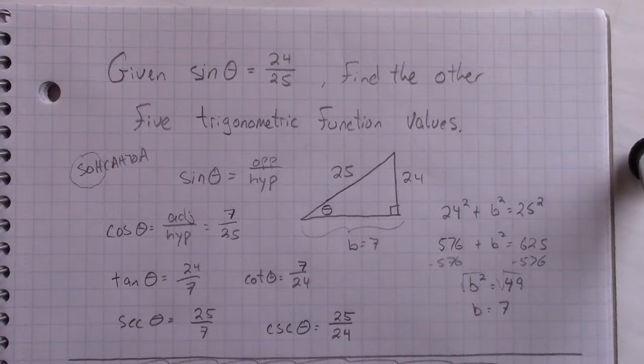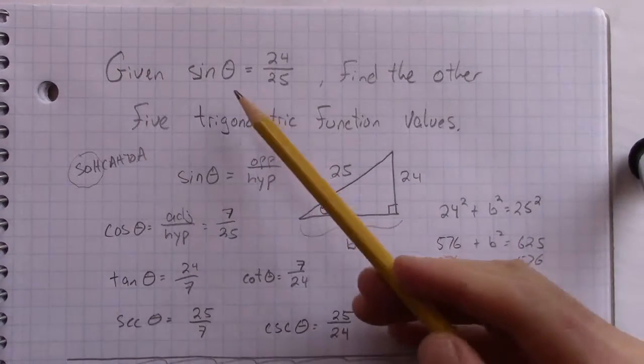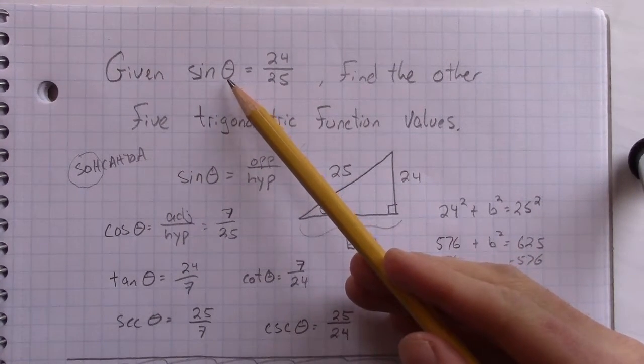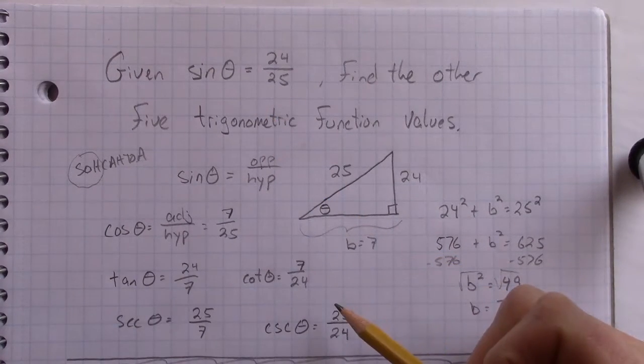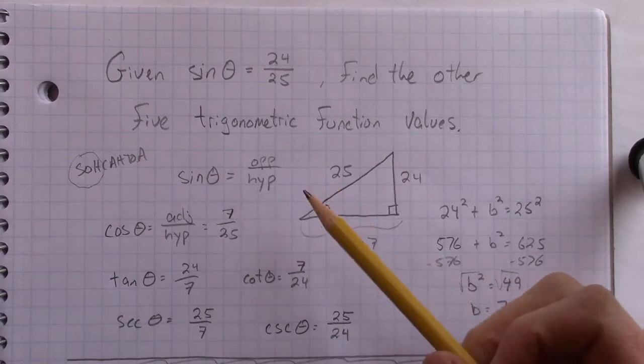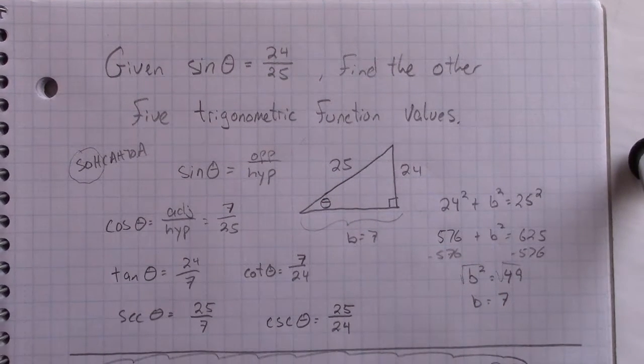But I see in another textbook another way of asking that question that maybe is more specific. Because what it didn't specify here is what theta could be, right? And like, what quadrant it would be in. So I see it also asked a different way.